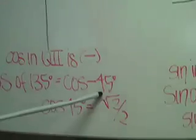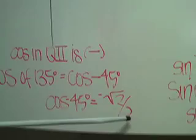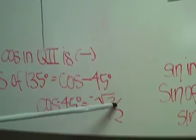Since the sign was negative, we keep the sign, and the answer is negative square root of 2 over 2.